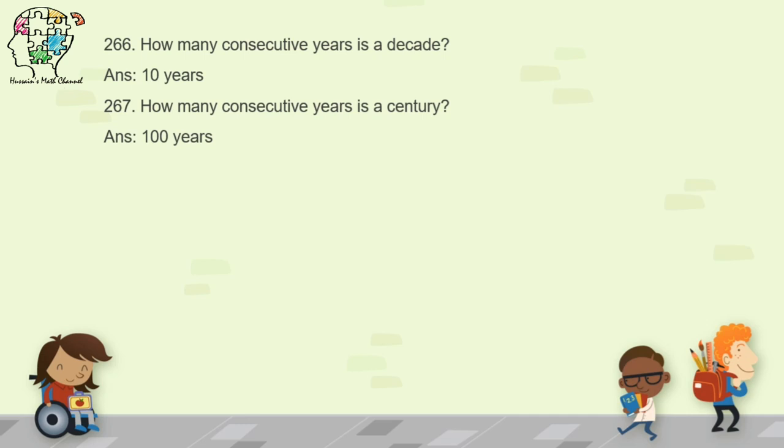Question 268: how many days are there in a leap year? In a leap year there are 366 days.